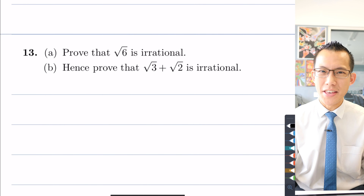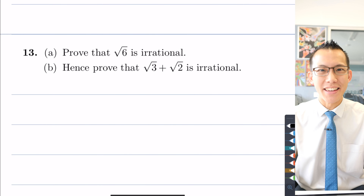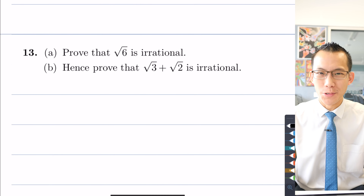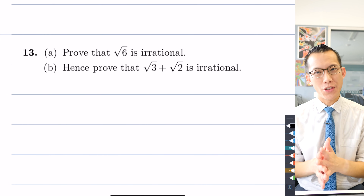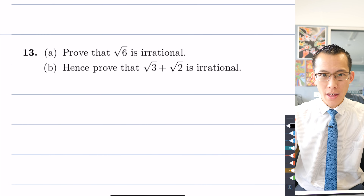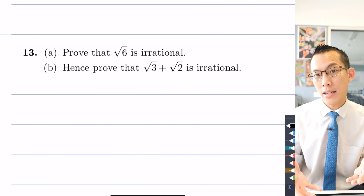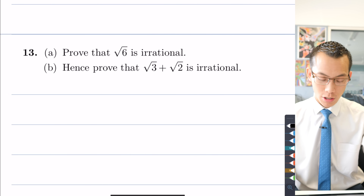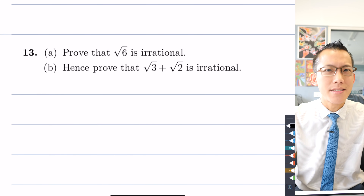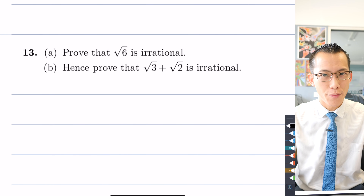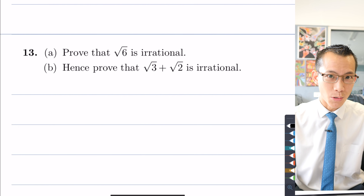Today we're going to prove that this pair of numbers are both irrational. Before we have a go at this proof, it's really important that you understand the frame of mind to get into before you actually begin a proof. This question comes in an exercise that's all about proof by contradiction, and that's the technique we're going to use.